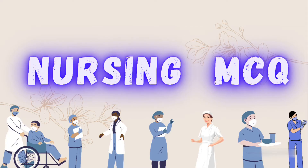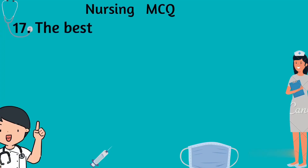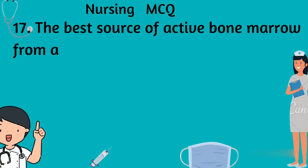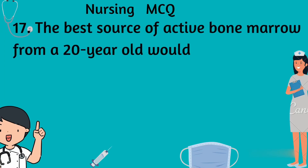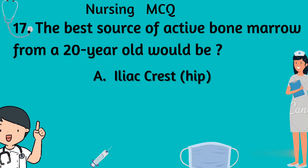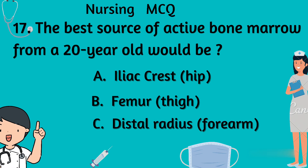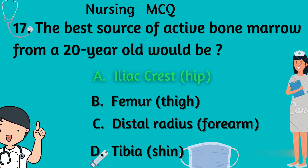Question number 17: The best source of active bone marrow from a 20-year-old would be — Option A: iliac crest, Option B: femur, Option C: distal radius, Option D: tibia. The right answer is Option A: iliac crest, or hip.